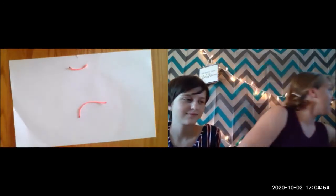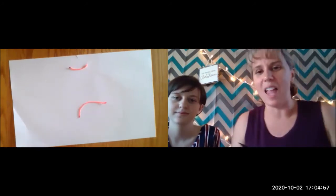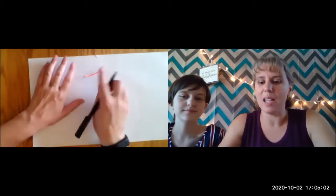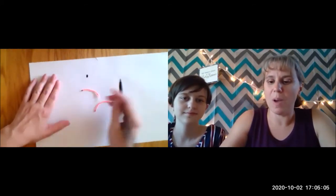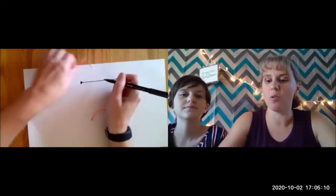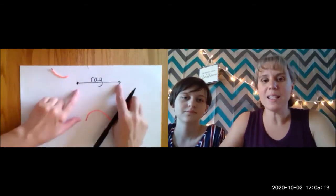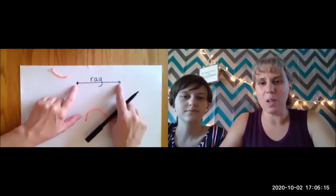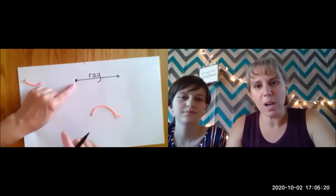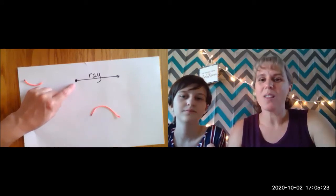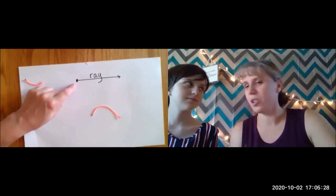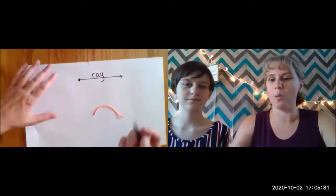These pieces of lines have names. When we have a line that ends at one end but goes on forever in one direction, this is called a ray. A ray is a line that ends on one side but goes on forever in the other direction. This point right here has a special name — it's where this ray ends, and when it's a ray we call it an origin, because it's where the ray originates from, or where it starts.